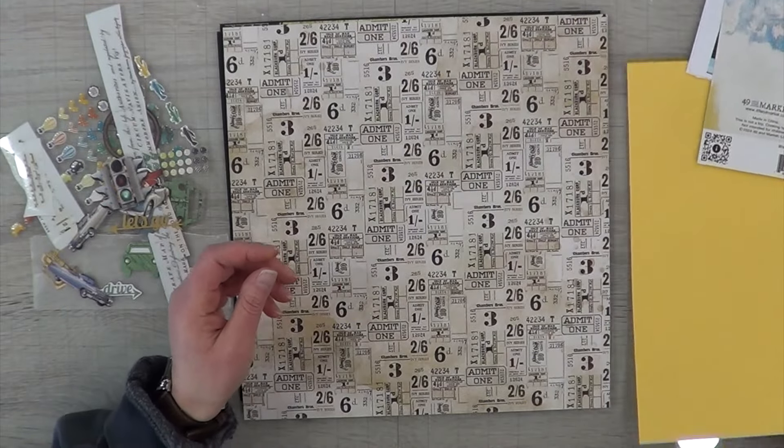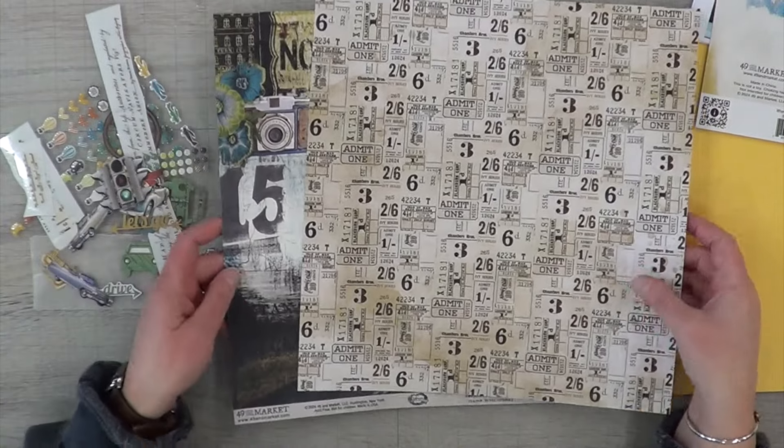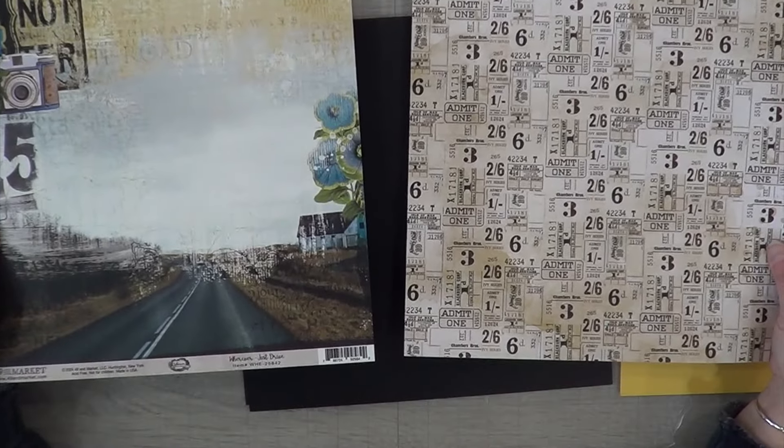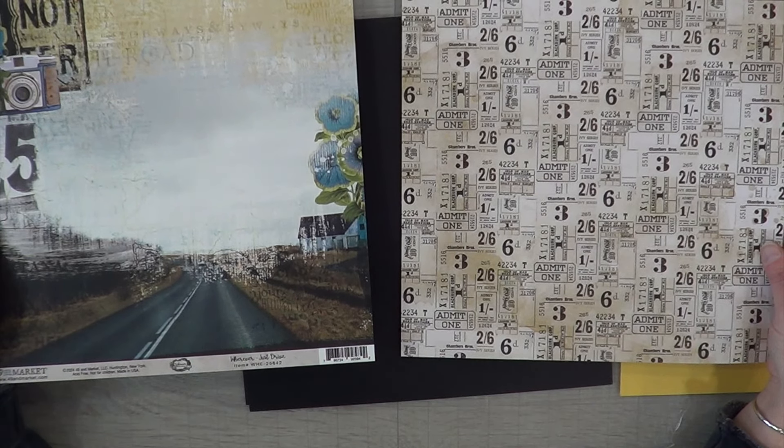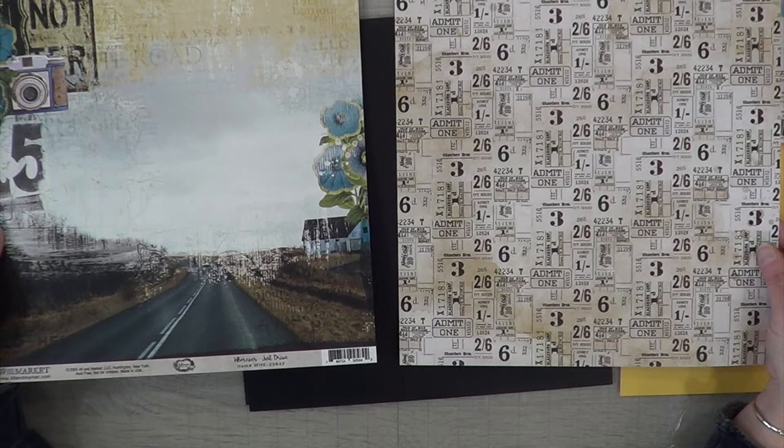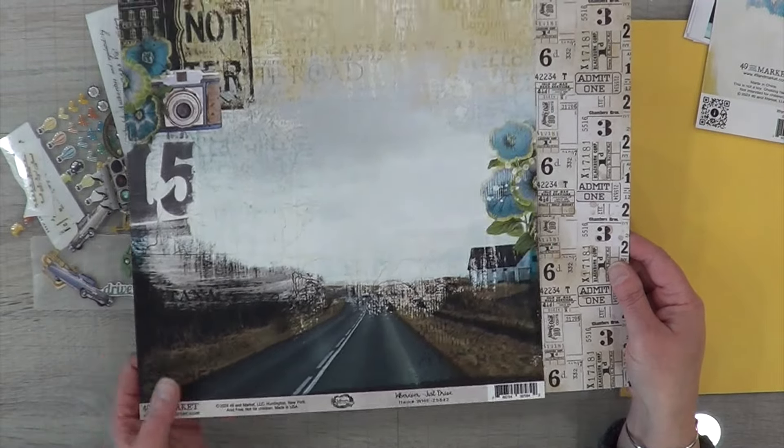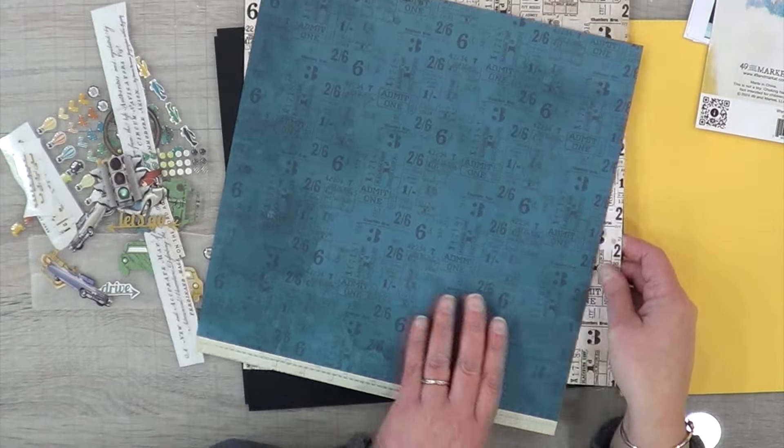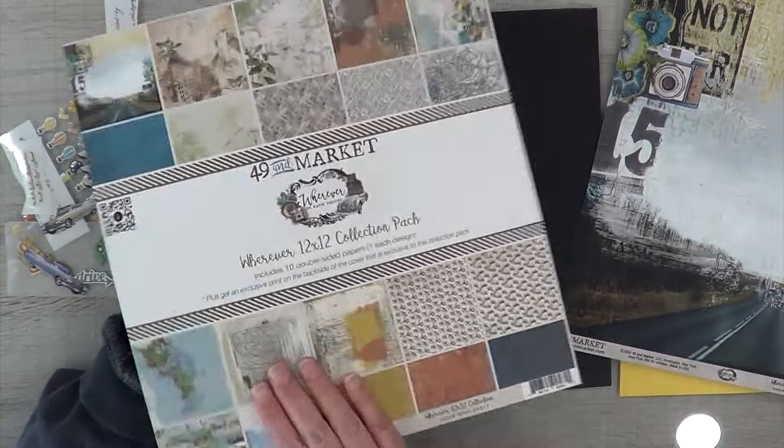I also pulled out this page as well as this paper. Now the first collection of tickets and whatnot printed are the backing paper for the 49 and Market Wherever collection. Then I'm going to use this Stretch of Highway - this was my favorite paper. I did love the blue side of this paper but I'm going to end up using the Stretch of Highway because it was perfect for my photos.